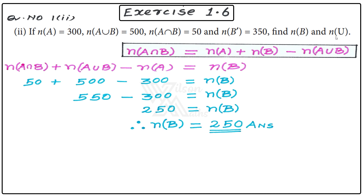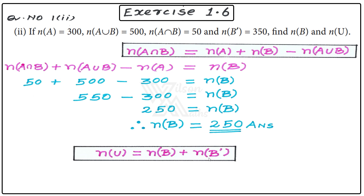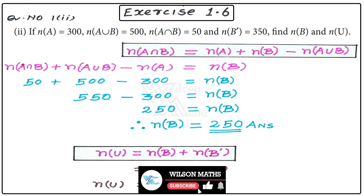Now we find n(U). The complement of B is given: n(B') = 350, and n(B) = 250. Using the formula n(U) = n(B) + n(B'): 250 + 350 = 600. Therefore n(U) = 600. If you like this video, subscribe, like, and press the bell icon for more videos.